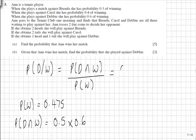So substituting that into our formula, we have 0.5 times 0.6 over 0.475, which should give you an overall probability of 0.632.